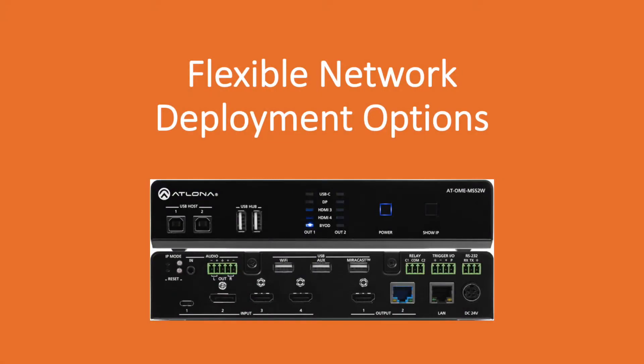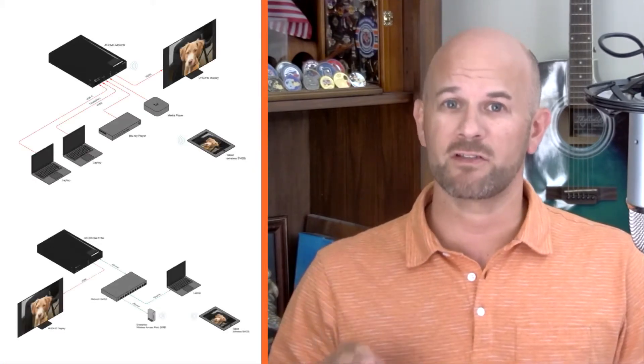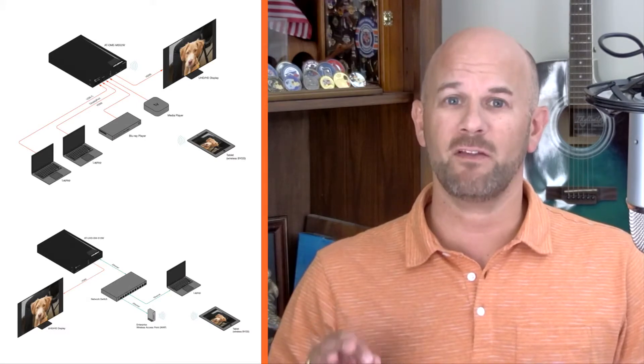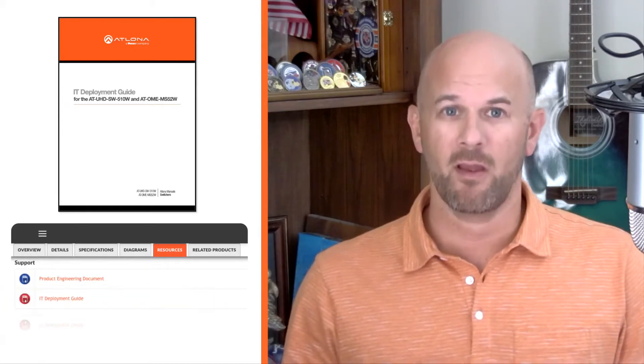Flexible network deployment options. You can connect directly to the MS52W via its own wireless access point or Wi-Fi. Or, for security reasons, you can disable it and bridge via Ethernet into the facility LAN. For detailed information, see the IT deployment guide under the Resources tab of the MS52 product webpage.